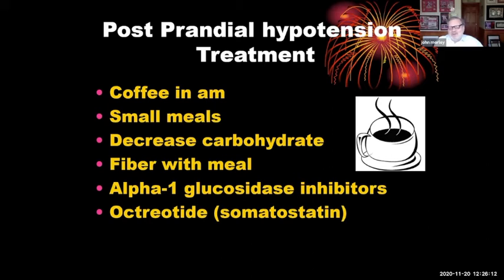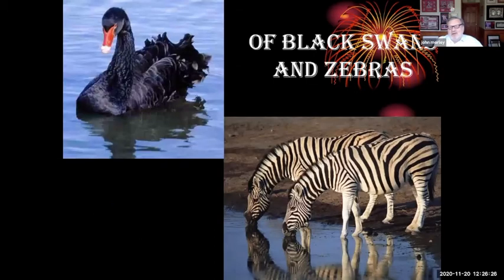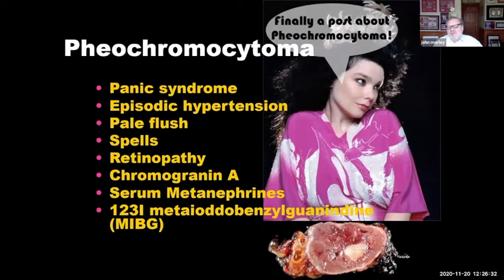The treatment for post-prandial hypotension, besides the drugs, is coffee in the morning, small meals, decrease the carbohydrate, give fiber with the meals, and then the alpha-1 glucosidase inhibitors. If they aren't working, you can go to octreotide. Now let's look at the black swans and zebras. Pheochromocytoma is a cause of orthostatic hypotension — they can have panic symptoms, hypertension followed by hypotension, a pale flush, spells, and retinopathy. You measure chromogranin A as the best way to pick it up, and then look at serum metanephrines, then use MIBG to localize where the pheochromocytoma is.